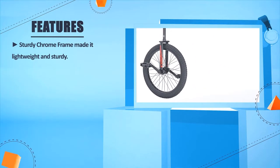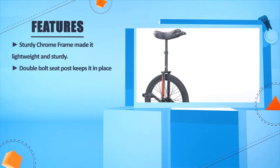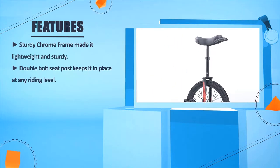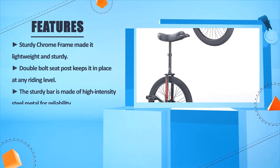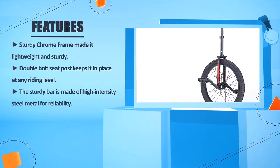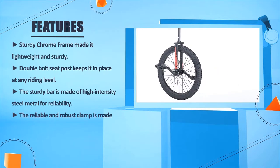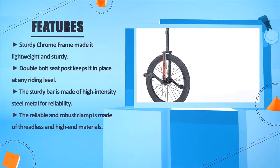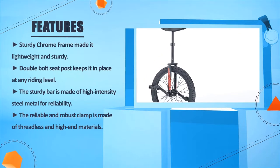Sturdy chrome frame made it lightweight and sturdy. Double bolt seat post keeps it in place at any riding level. The sturdy bar is made of high intensity steel metal for reliability. The reliable and robust clamp is made of threadless and high-end materials.